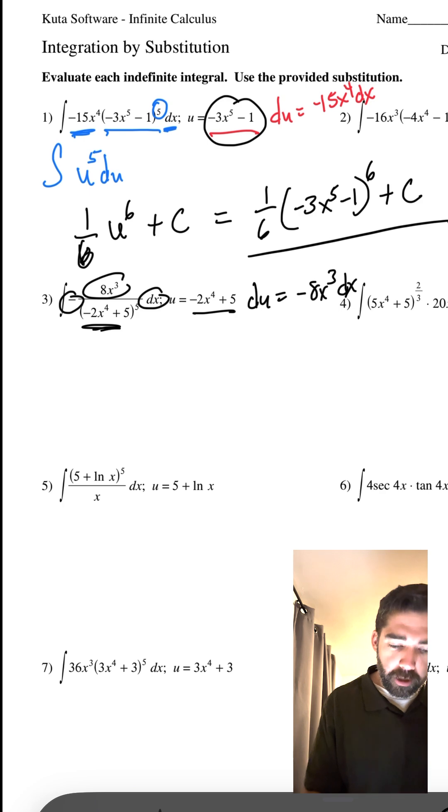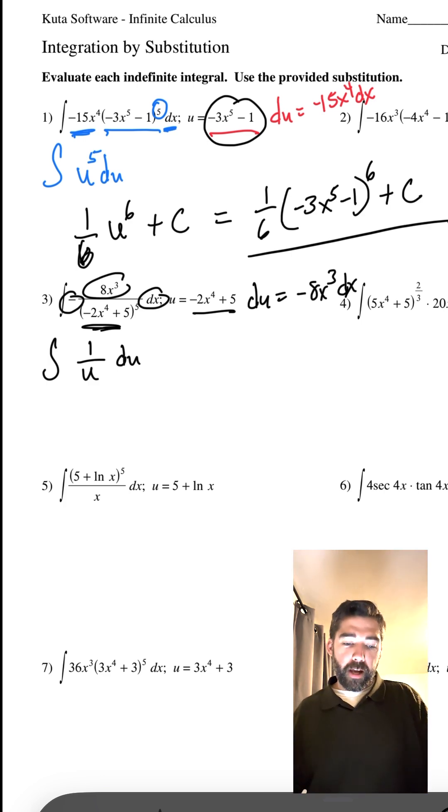But what do we have? And here's U, right? What do we have? Well, we have the integral of 1 over U DU. That is what we have.